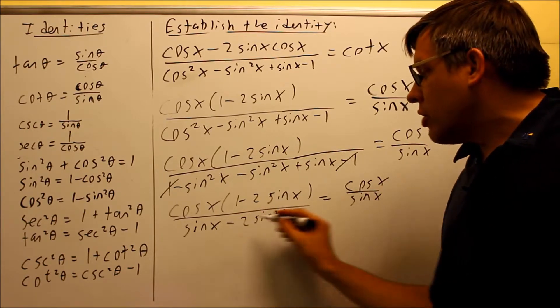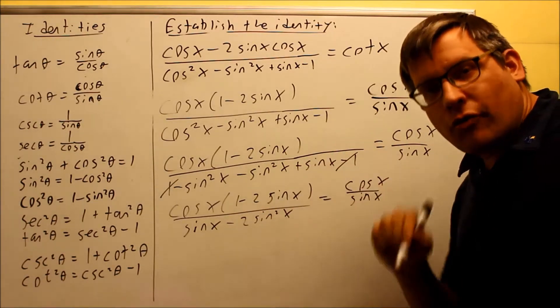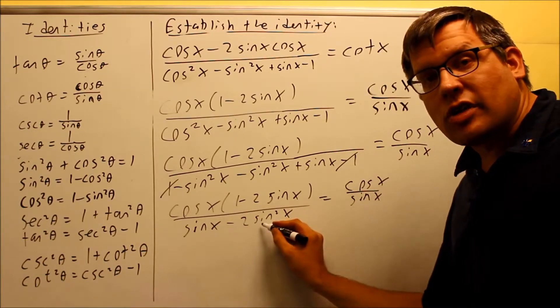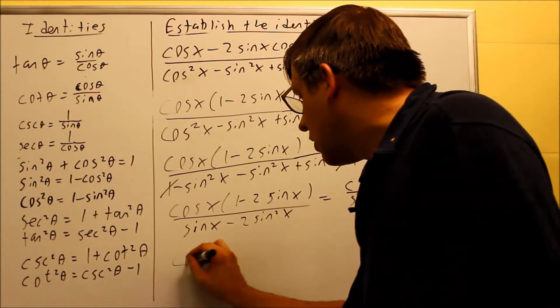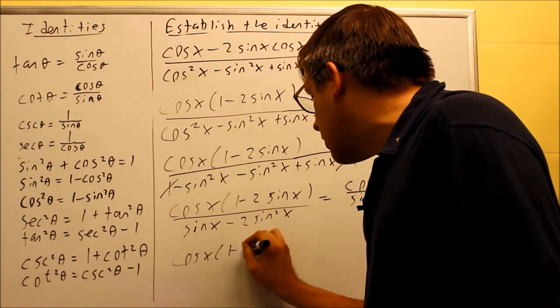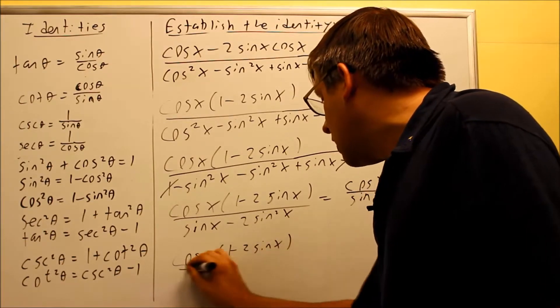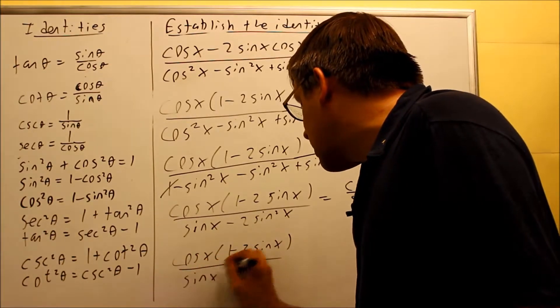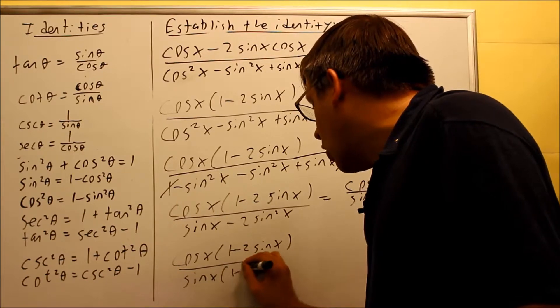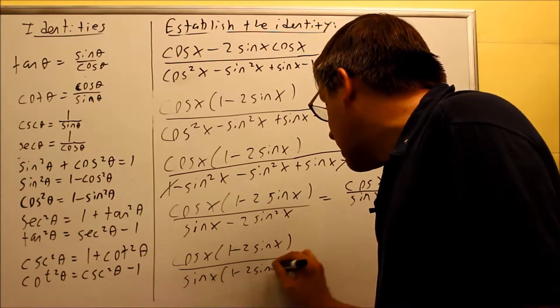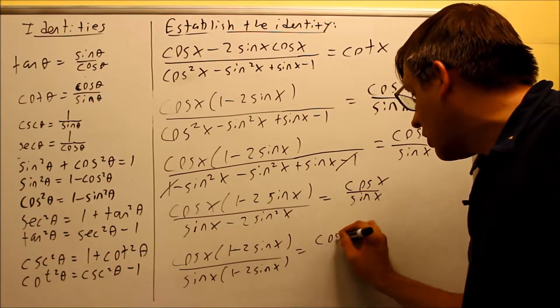Okay, now what I want to do is see if I can do another factoring step, and it turns out I can. There's a common factor of sine on there that I can pull out. So I get cosine x, one minus two sine x on top. And the bottom, I'm going to pull out a sine x. And I get one minus two sine x. I get exactly the same thing that I have on the top.